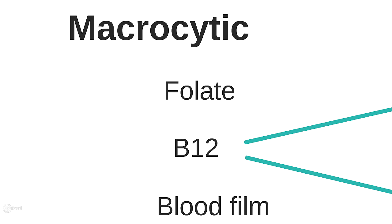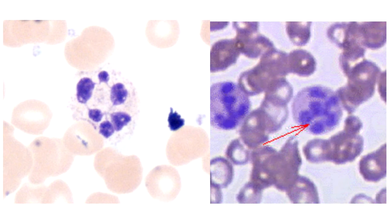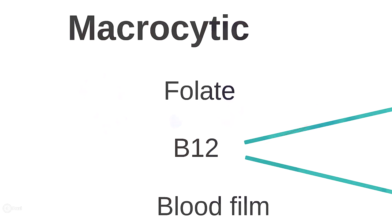Now on to macrocytic anemia. A blood film may give you useful information. B12 and folate are not only used in the production of red blood cells but also white cells and platelets. Sometimes we can see characteristic changes in neutrophils in the blood film — specifically hypersegmented neutrophils, which have more lobes in their nucleus than the average neutrophil.